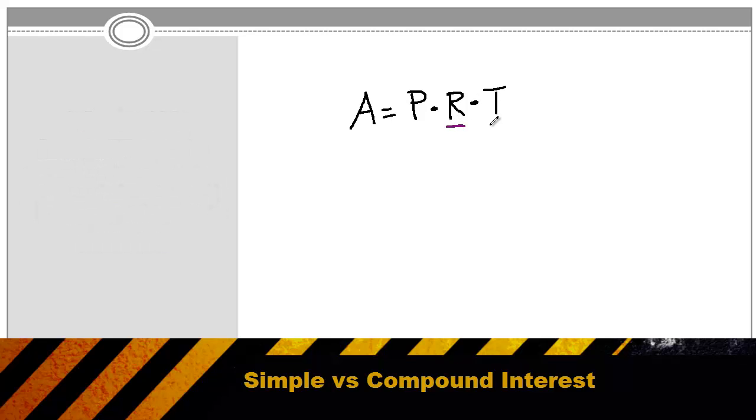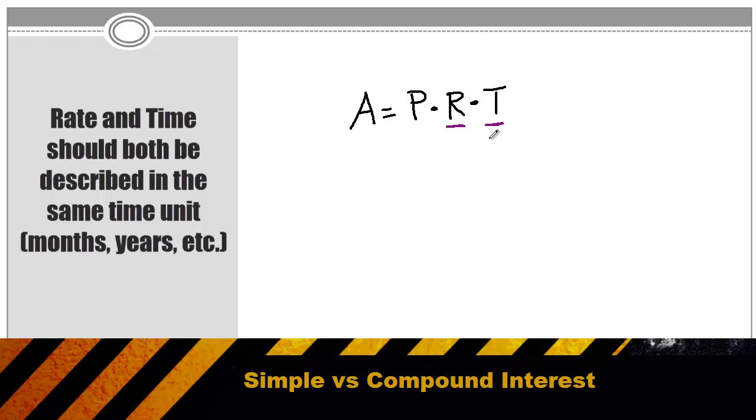Both your interest rate and your time should use the same unit of measure, meaning that if your interest rate is described in years, say they give you an interest rate of 6% per year, then your time should also be described in years. So if the problem in this case said six months, you would want to describe six months as one half a year.